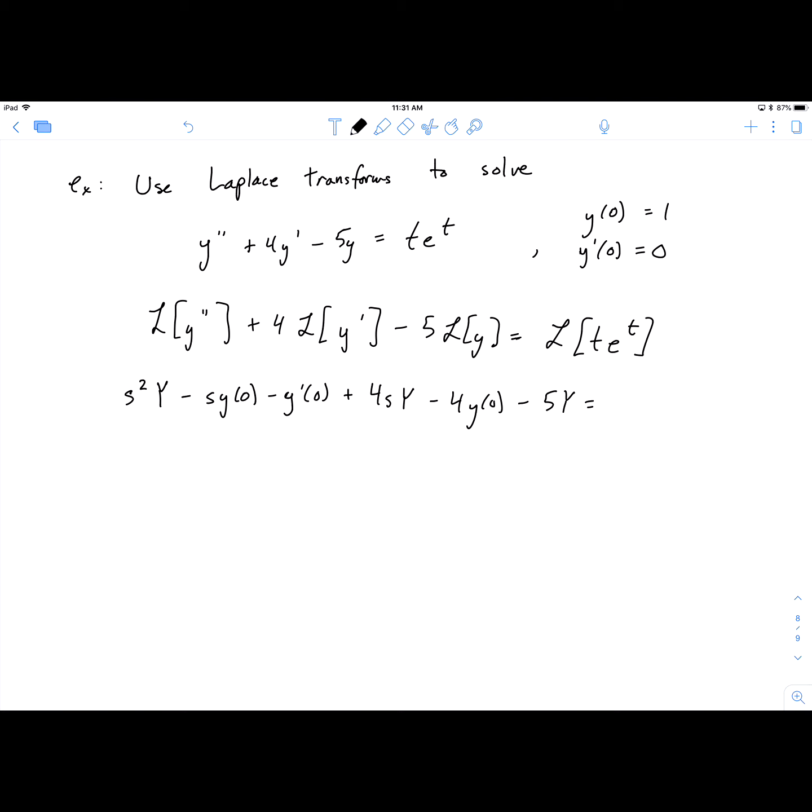The right-hand side, if you look here, we could do this kind of either way. You could think of it as the exponential with the t to the power of n modifier on it, and use the derivative. Or you could think of the transform of t with the exponential modifier on it.